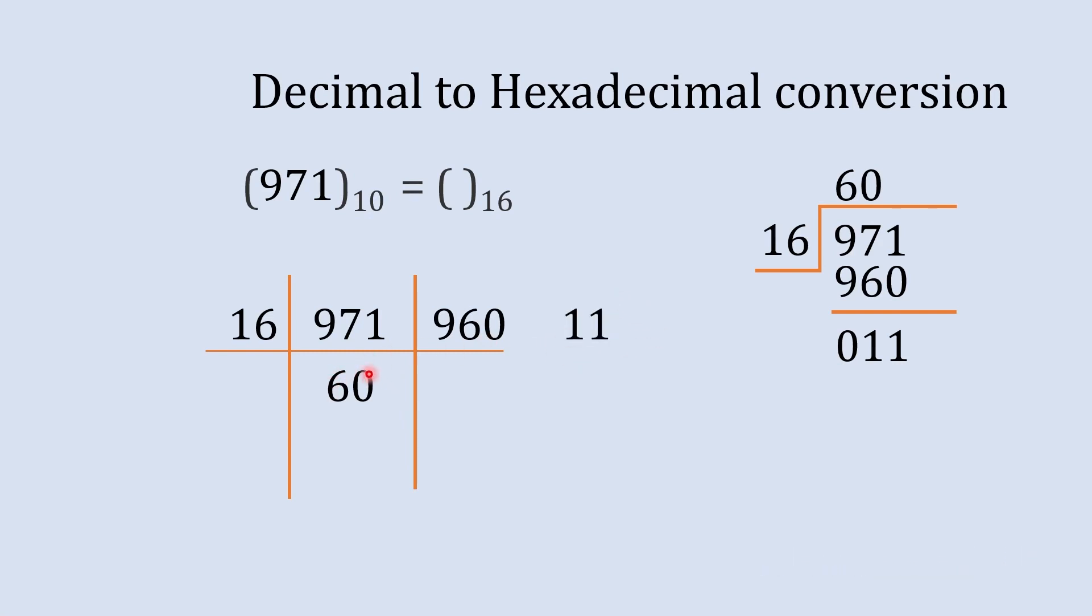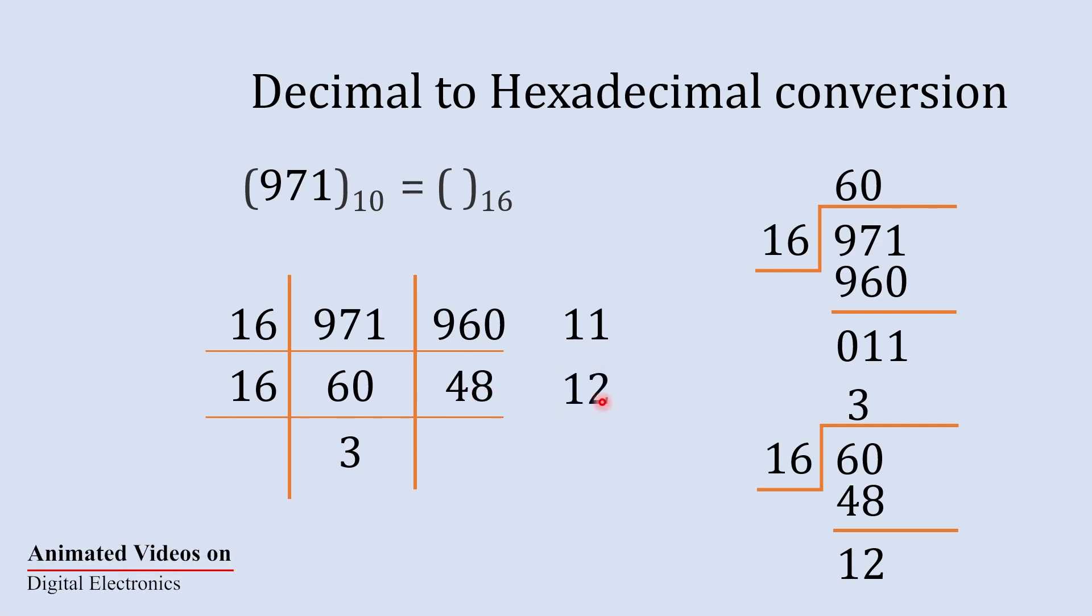Now further this 60 will be divided by 16. So again we'll divide this 60 by 16. So 60 divided by 16, so 16 times 3 is 48. 60 minus 48 gives us 12. So this quotient 3 will be written over here. 60 minus 48 gives us 12 that is remainder.